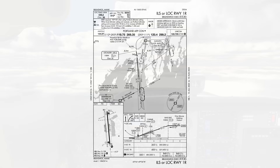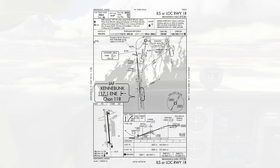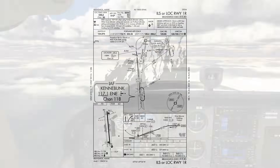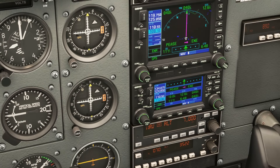Let's look at our approach transitions. The initial approach fix to the southwest is the Kennebunk VOR. This is where we're currently navigating to as our flight plan dictates, so it's a strong possibility we'll be assigned this transition. The VOR frequency is 117.1. If we didn't already have this in, let's do so now. We're going to put it onto our NAV2, saving the NAV1 for the localizer frequency since this is an ILS approach, and we'll ID the station.